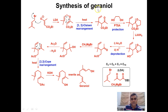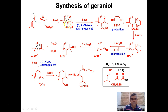Another synthesis of geraniol involves ethyl acetoacetate chemistry, methyl magnesium bromide and allyl bromide — a very interesting synthesis. We need to assemble a total of 10 carbon atoms: five come from allyl bromide, four from ethyl acetoacetate, and one from methyl magnesium bromide. The synthesis starts with the reaction of ethyl acetoacetate with LDA (lithium diisopropylamide), generating an enolate anion. This enolate anion is alkylated using allyl bromide to give a vinyl allyl type of ether.